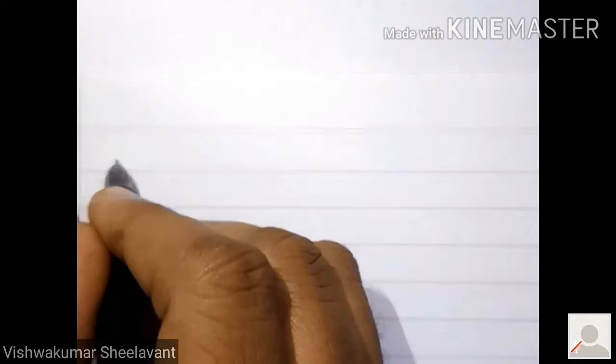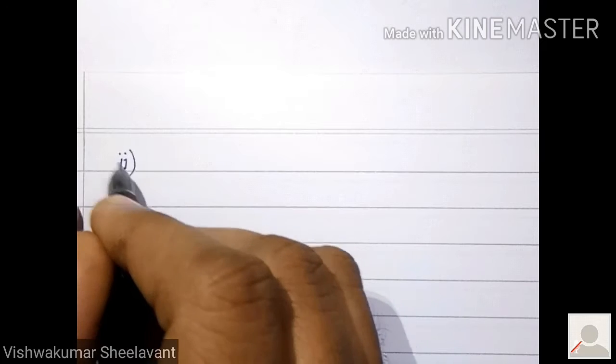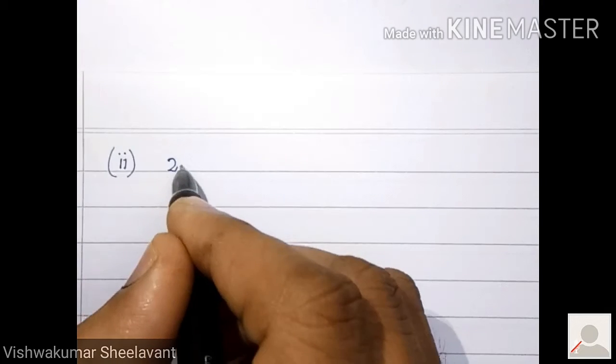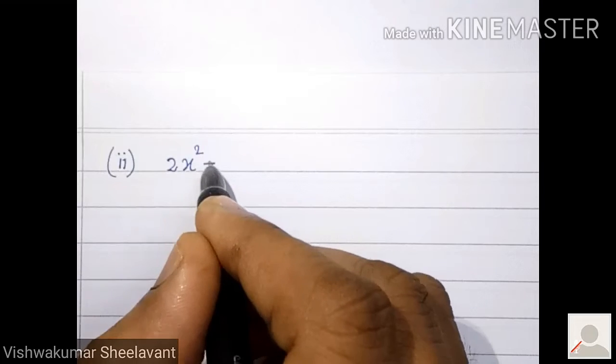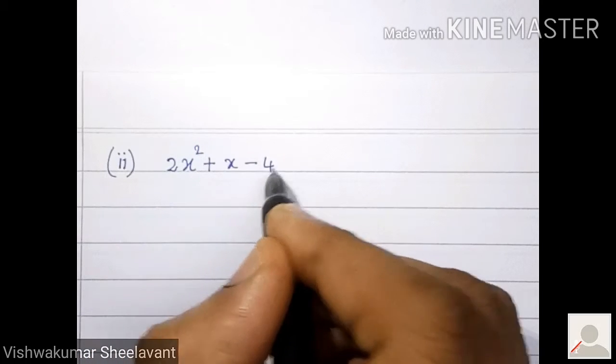A second question: 2x square plus x minus 4 equal to 0.